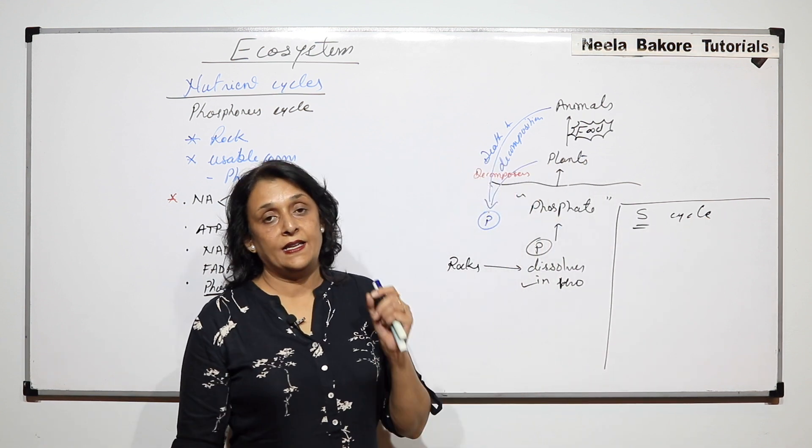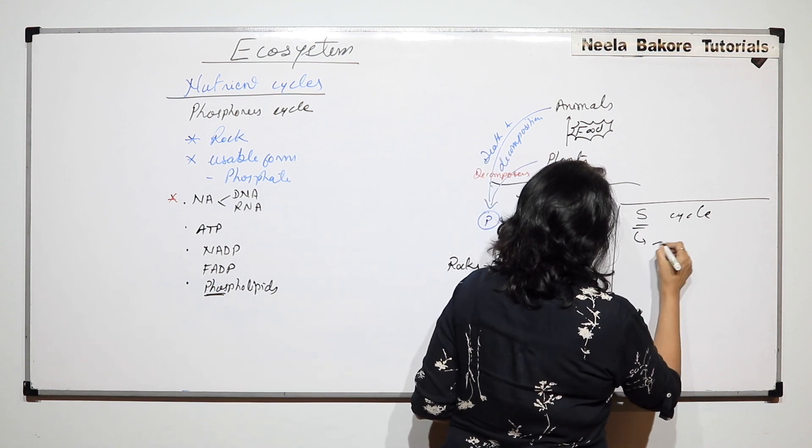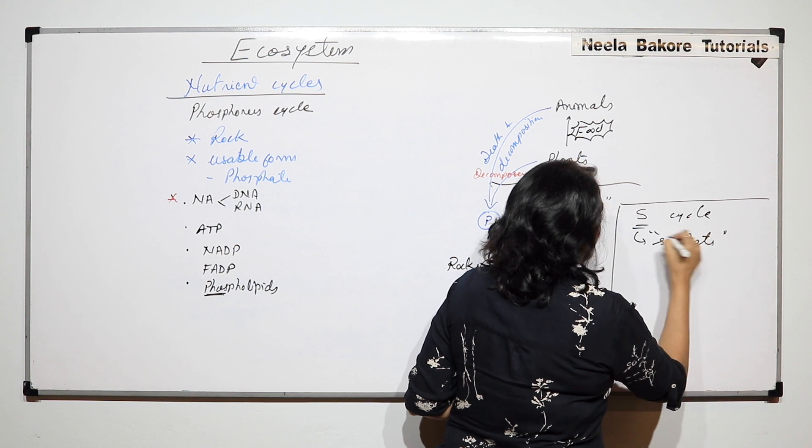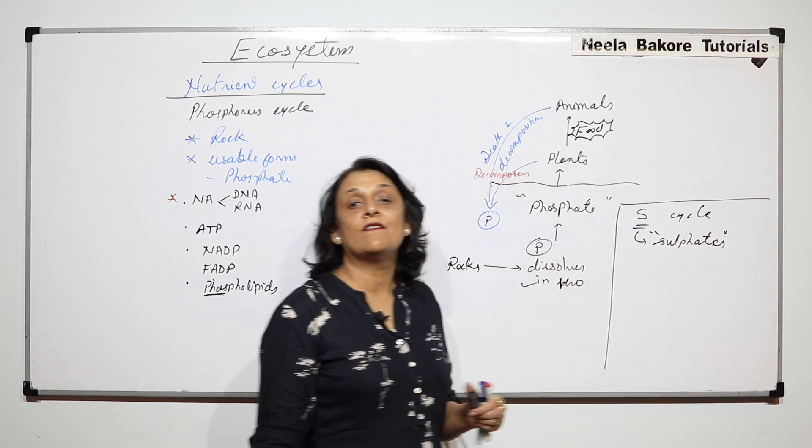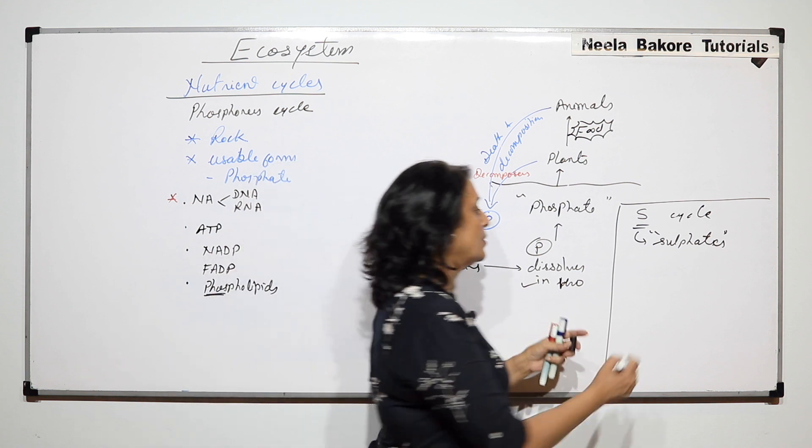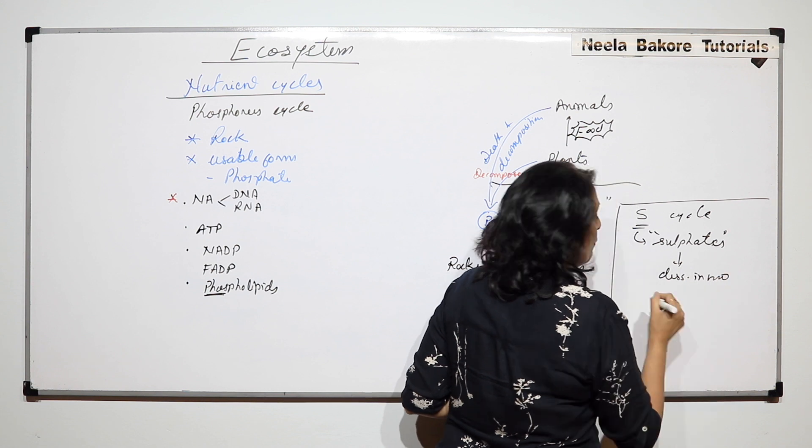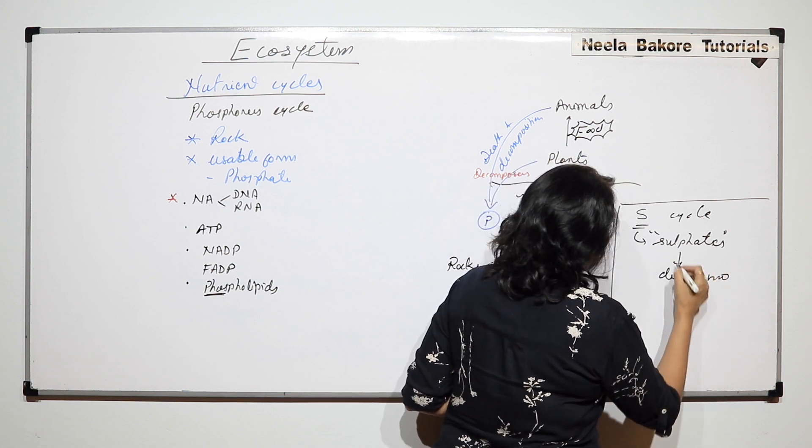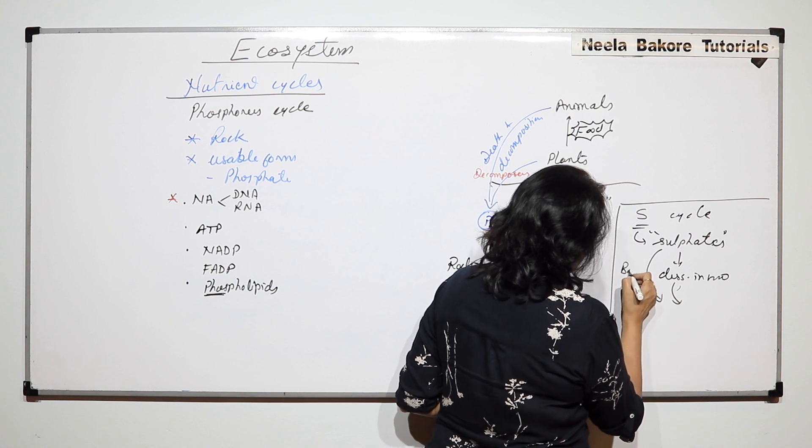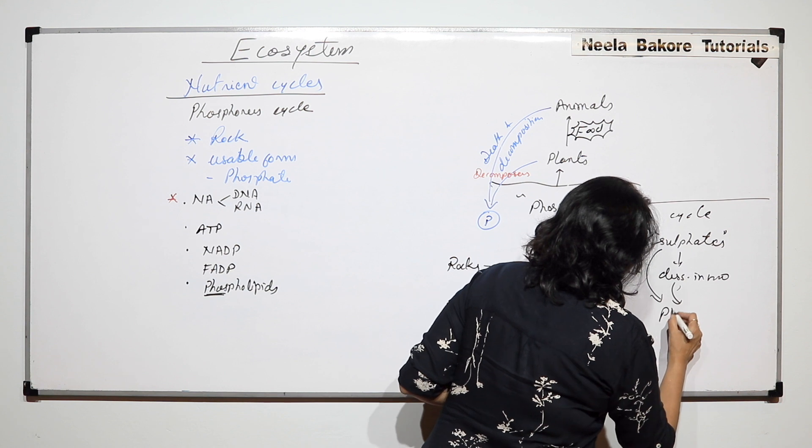Sulphur cycle - sulphur is also available in the soil in the form of sulphates. It is used as sulphate. It will be dissolved in water, and with the help of some bacteria this can be used by plants.